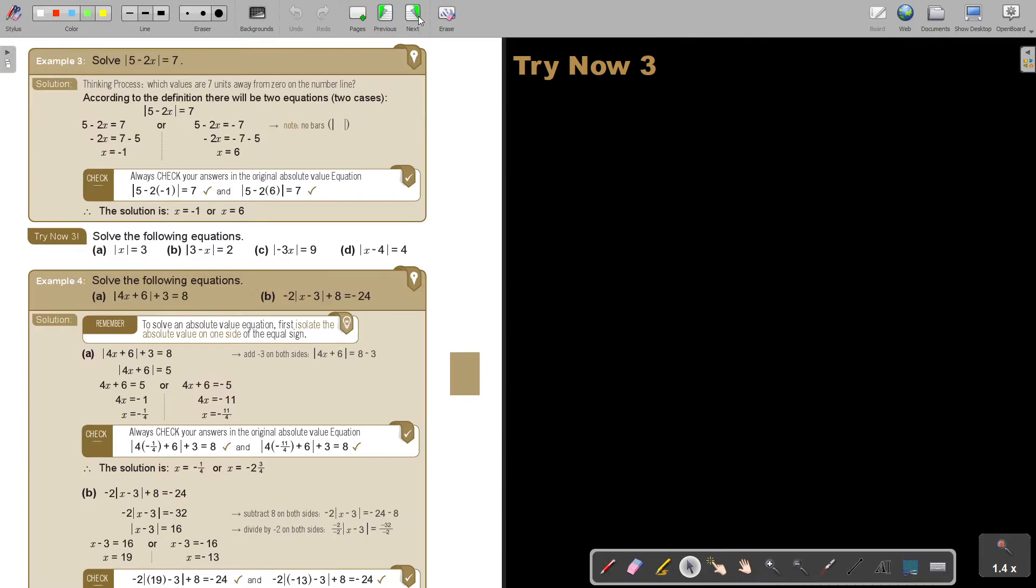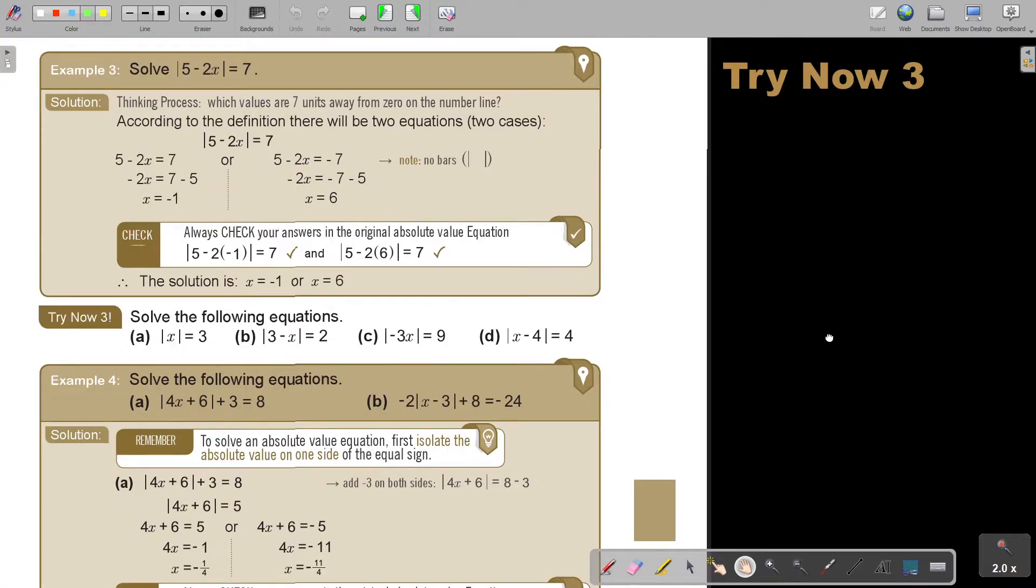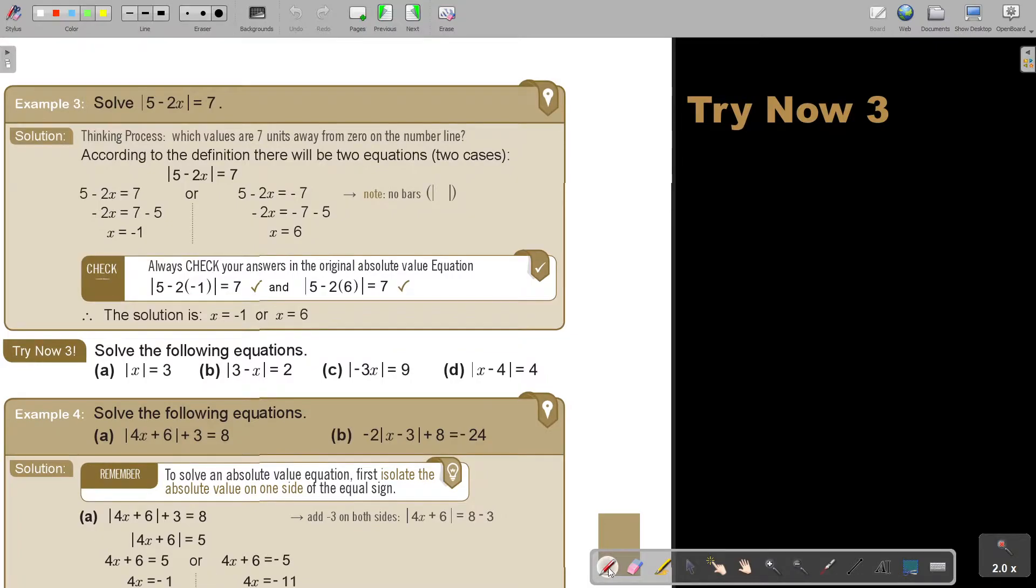Let's look at an example. Solve |X - 7| = 7. Thinking process: which values are seven units away from zero on the number line? According to the definition, there will be two equations, two cases. There will be a positive and there will be a negative.